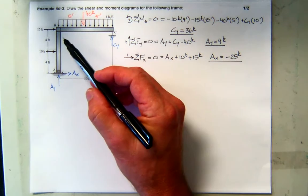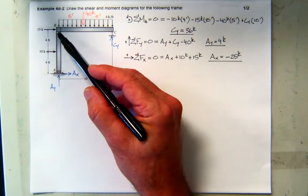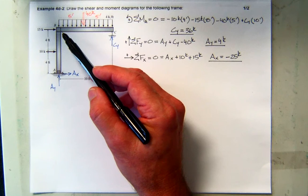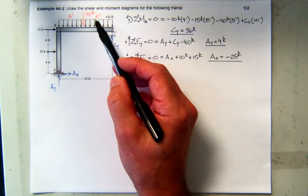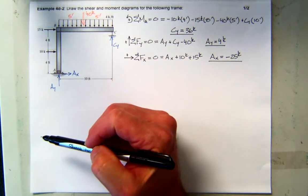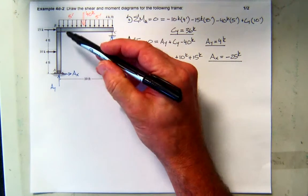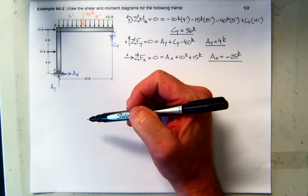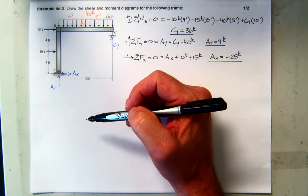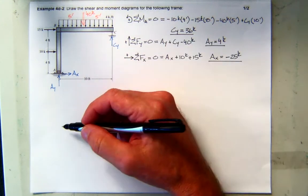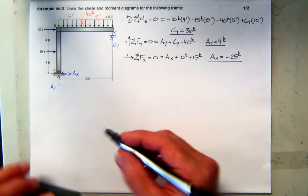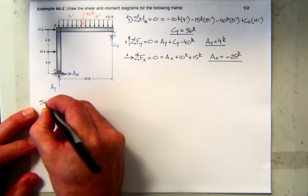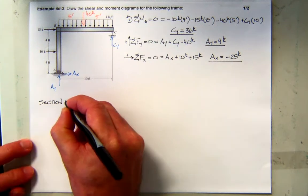Now what I need to do is cut the structure at B and decide which of these two sections to work with — we could do AB or BC. The way I'm looking at it, I don't see a clear advantage to one or the other, so I'm just going to pick section BC.